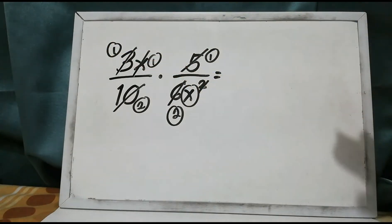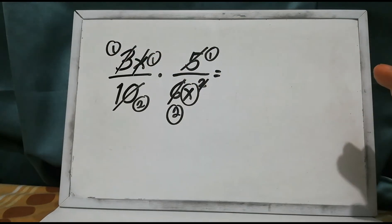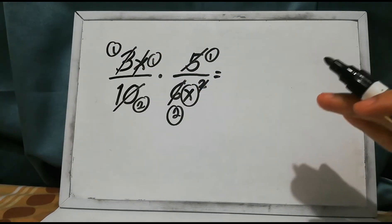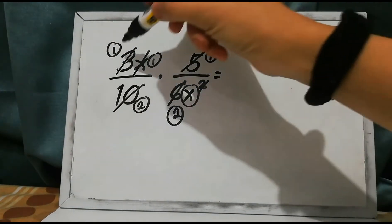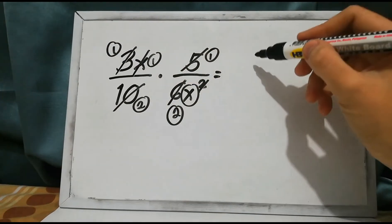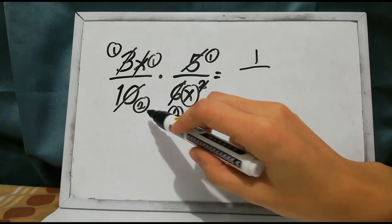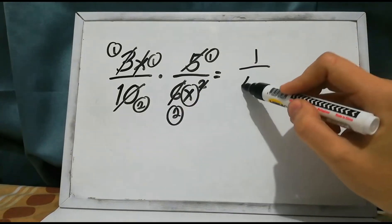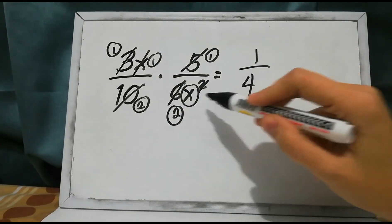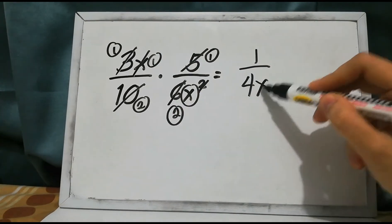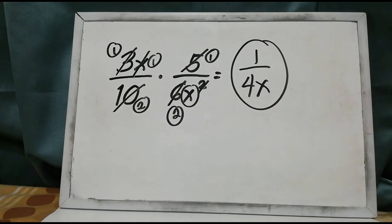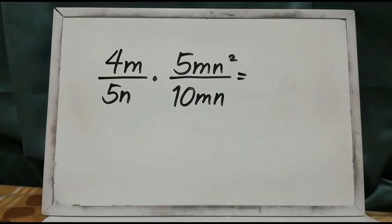Multiply all the remaining numbers and variables. 1 times 1 times 1 is 1, over 2 times 2 is 4x. So the product is 1 over 4x.